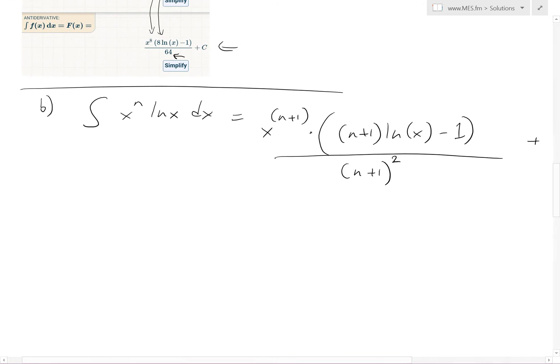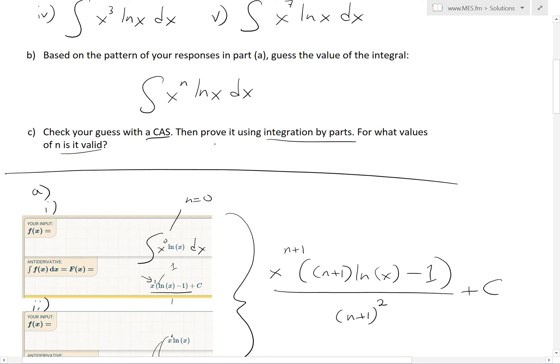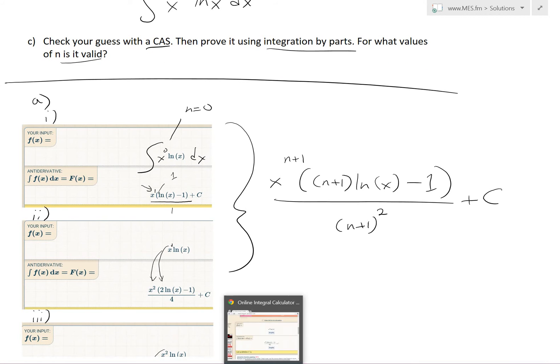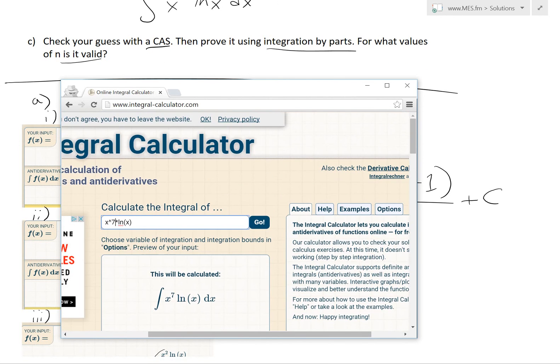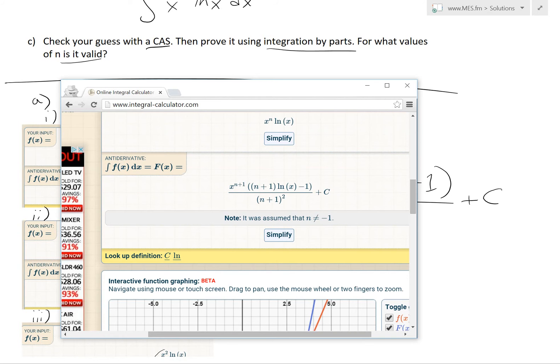So that is our guess based on the pattern. So now let's look at part c, which is check your guess with the cas, then prove it using integration by parts, and for what values of n is valid. So we plug this inside here now. So with this calculator, you could use variables. So let's go with x to the power of n. And then it's just a general variable. And there's our xn plus 1, there's n plus 1, ln x minus 1, n plus 1 squared. It's exactly what we just derived.